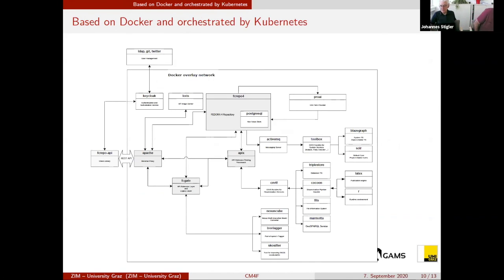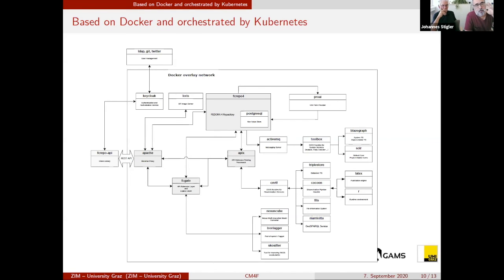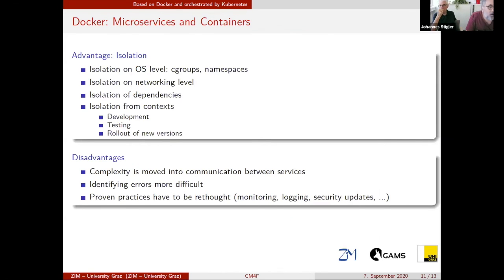I will take over here and switch focus from the conceptual view to a more DevOps view. You have seen this slide — Johannes explained that our infrastructure is heavily based on services. Each rectangle you see here is a service in our infrastructure. We put every service into its own Docker container. The question now is why. From our experience over the last two years or so, you can summarize it with one word: isolation.